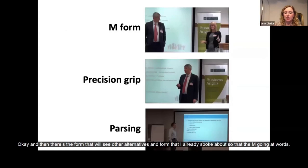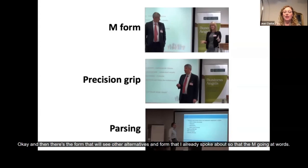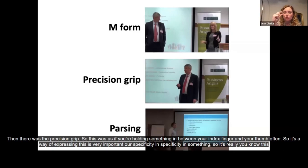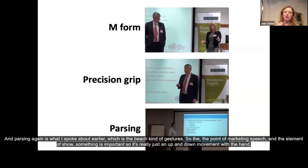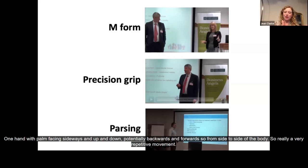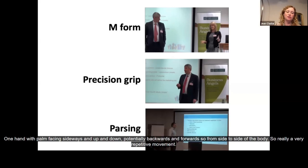Then there was the precision grip — as if you're holding something between your index finger and thumb — a way of expressing 'this is very important' or specificity. Often used by politicians to show a really important point. Parsing is the beat-type gesture I spoke about earlier — just an up-and-down movement with one hand, the palm facing sideways, potentially backwards and forwards — a very repetitive movement marking parts of speech. And there were also deictic gestures, which are pointing gestures.